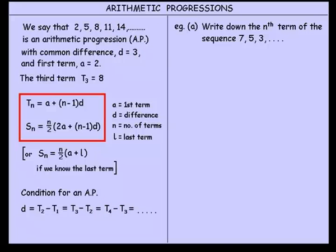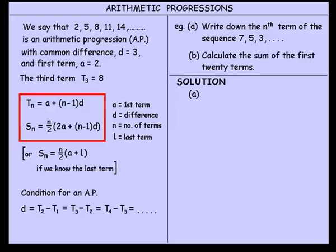Let's look at an example now. We're asked to write down the Nth term of the sequence, 7, 5, 3. Okay, that sequence continues. Then in part B, calculate the sum of the first 20 terms. Well, let's solve part A firstly. There's our sequence, 7, 5, 3. It's going down by 2. It's going down by 2. So therefore we write the difference equals negative 2. It's going down by 2. The difference is negative 2. We can see that's the first term. So we write A equals 7. And the question wants us to do, write down the Nth term.